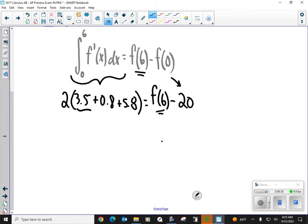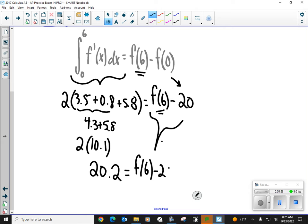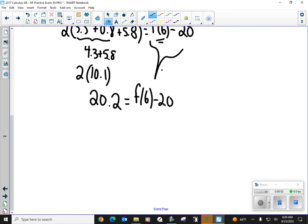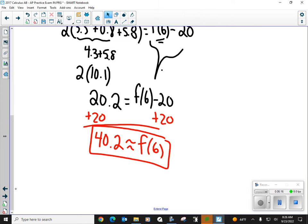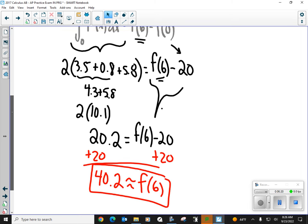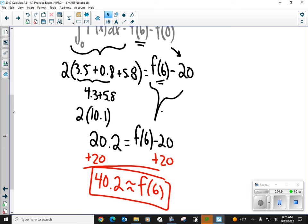So, all right, 3.5 and 0.8 is 4.3 plus 5.8. That's one. Is that 10.1? That is 10.1. That's a point right there. I got to double that and I get 20.2. All right? Now, 20.2 is going to equal f of six minus 20. So all I've got to do at this point is add 20 to both sides. And that's our approximation. 40.2 is our approximation of f of six. It's not exact because it's not an integral, an exact integral. It's an approximation because we're using a Riemann sum. So you should get 40.2. There you go. That wasn't complicated at all.